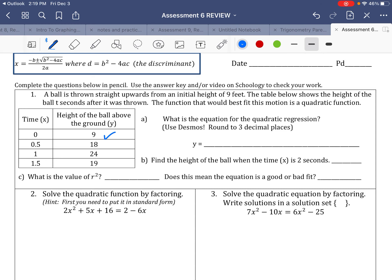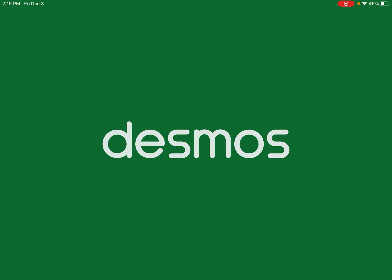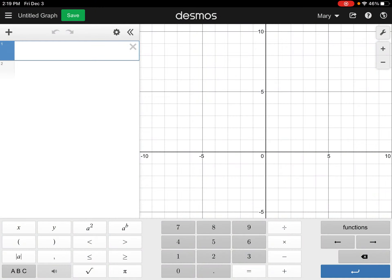So we are going to go ahead and go to Desmos and come up with a quadratic function for this. Here are the steps for that. Remember, you have to go to Desmos, press the plus key up in the top corner, and press table. So I need 0, 0.5, 1, and it kind of does it for me. Up here I have 9, 18, 24, and 19.